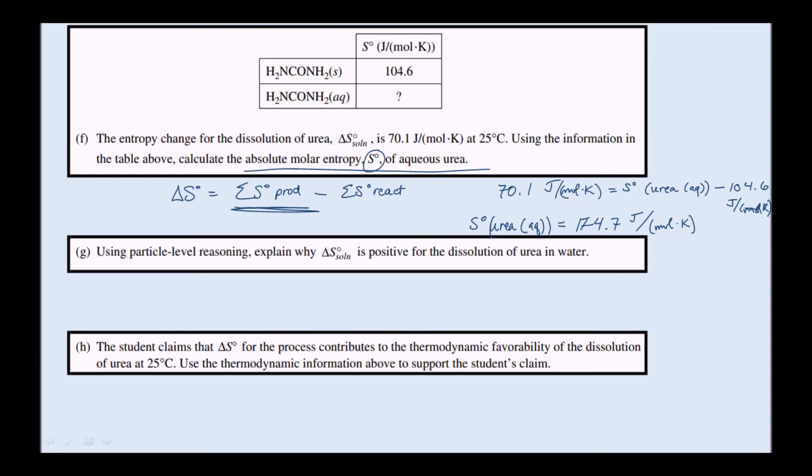Part G: Using particle level reasoning, explain why delta S solution is positive for the dissolution of urea in water. If we look back at that equation again, we have solid urea is in equilibrium with urea aqueous. That's the equation for the dissolution.